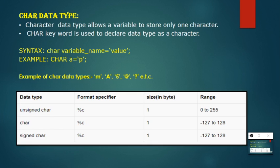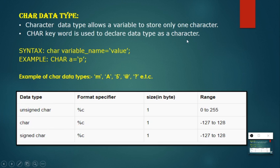You can see the syntax: char space variable_name = value in single quotation, so the value should be given in single quotation. For example, char a = 'p'. Some examples include 'm', 'a', '5', '#', '?' and so on — everything is kept in single quotations. The keyword char is used to declare a character data type.